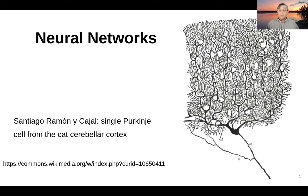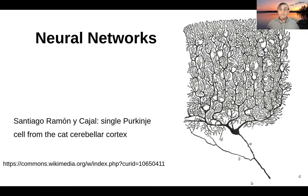The neuron hypothesis was that neurons actually did computation. One of Cajal's grand contributions was that he studied the anatomy of individual neurons and groups of neurons, and one of his exquisite drawings is shown here on the right-hand side. This is a single neuron from the cerebellar cortex of a cat, and it shows the primary pieces of an individual neuron.